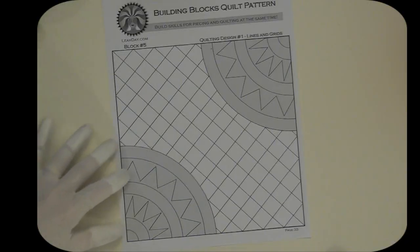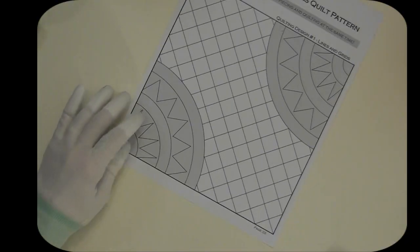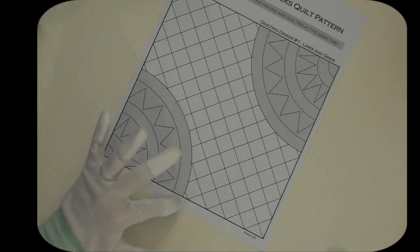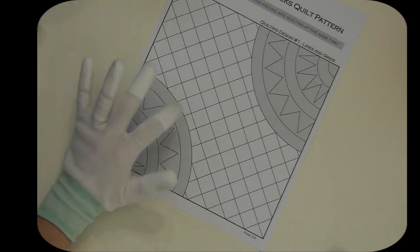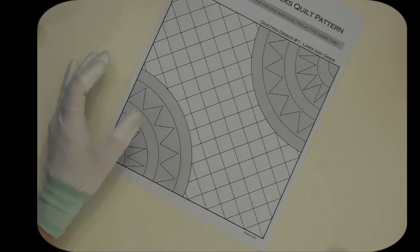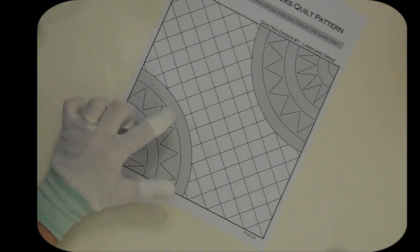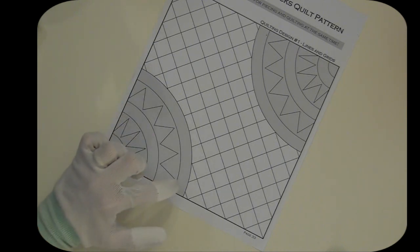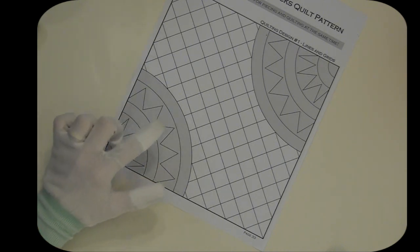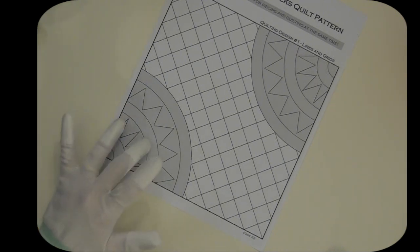In this particular block we have these beautiful curves in the corners. Let me show you what the quilting design is going to look like over them. You can see these beautiful arc shapes, these beautiful curves, and I really wanted to emphasize that. We've got some rows of echoing here and some ziggy-zaggy lines.